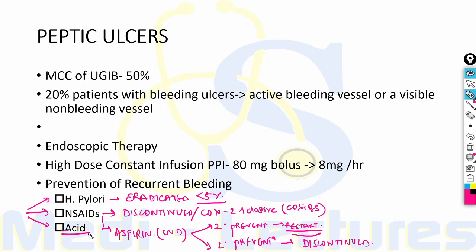For upper GI bleed unrelated to either H. pylori or NSAIDs, these patients should remain on PPI therapy indefinitely because there is a significant bleeding risk without PPI therapy.